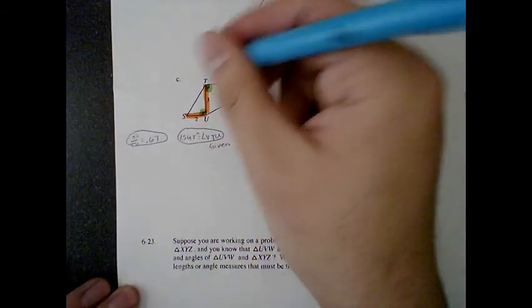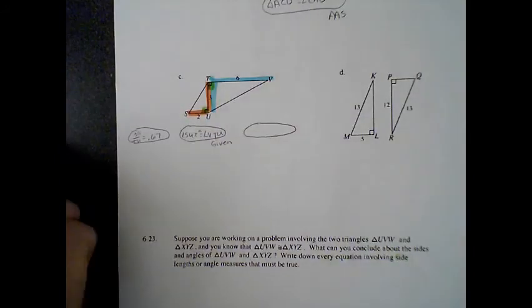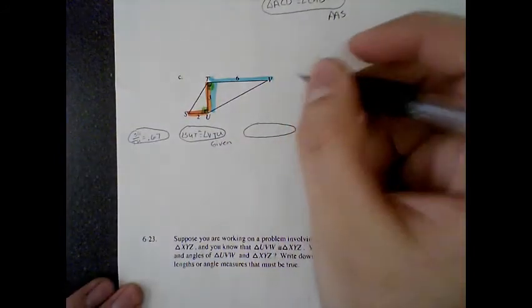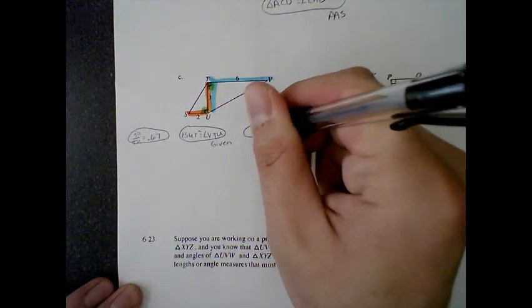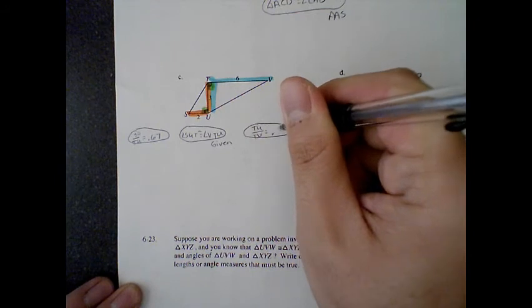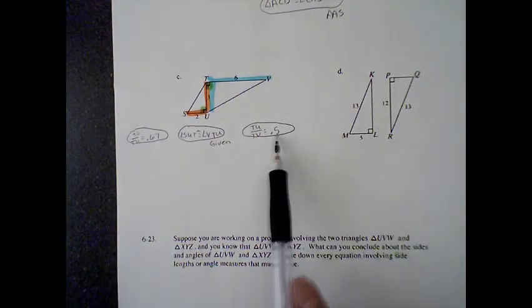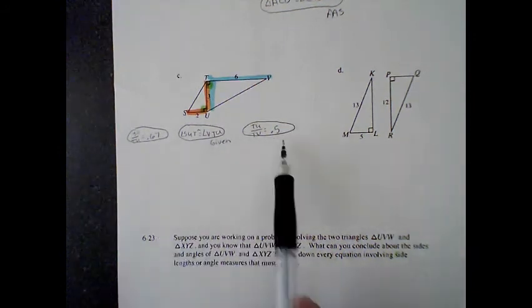The next pair of corresponding sides would be, remember we're doing small over big, TU over TV, and that would equal 0.5. So because my side ratios are not the same, these triangles are not similar.